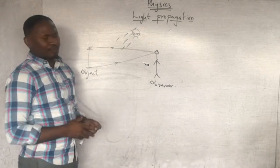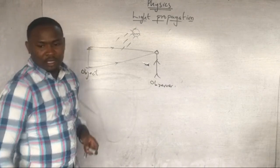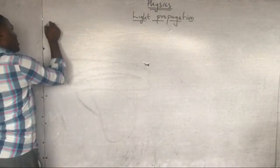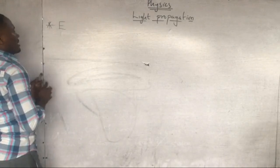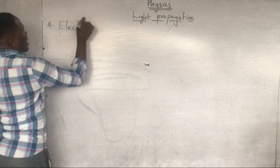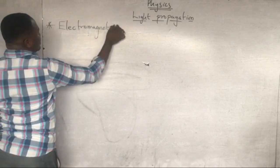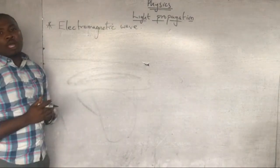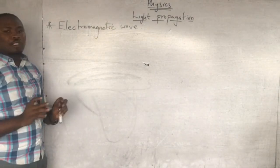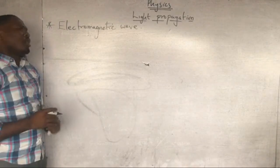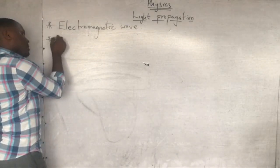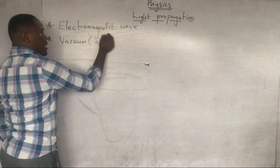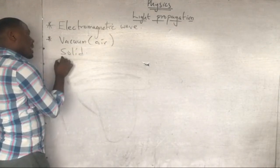Light is a form of energy which brings about sensation of vision. The first thing to know about light is that light is a form of electromagnetic wave. When we say light is an electromagnetic wave, we mean that light does not require a material medium for propagation — light can go through vacuum. Light can also go through solid and through liquid.